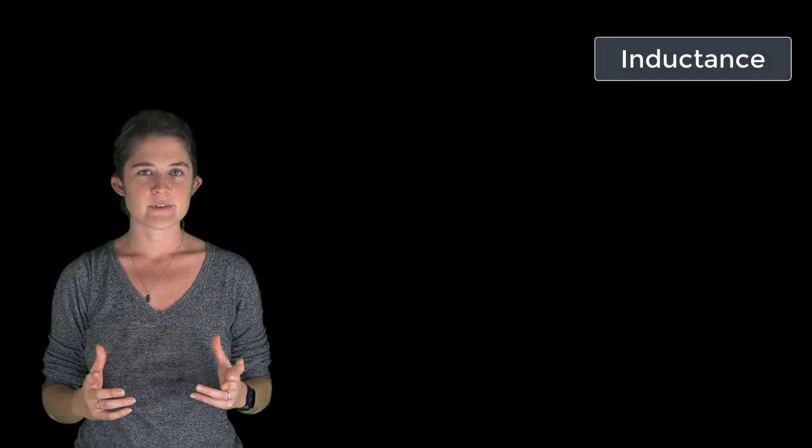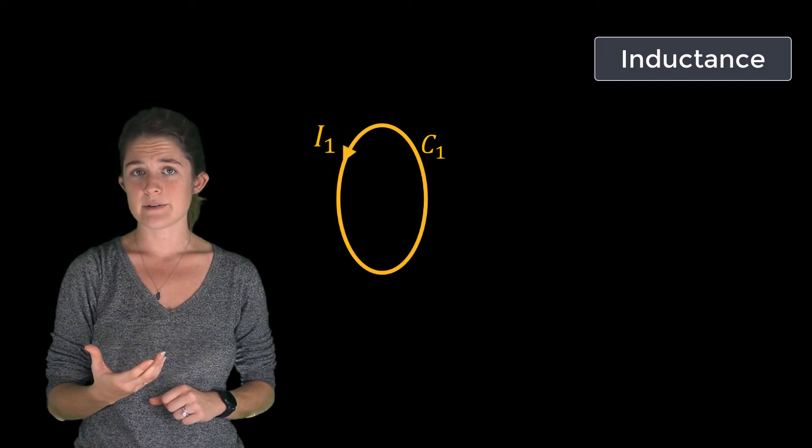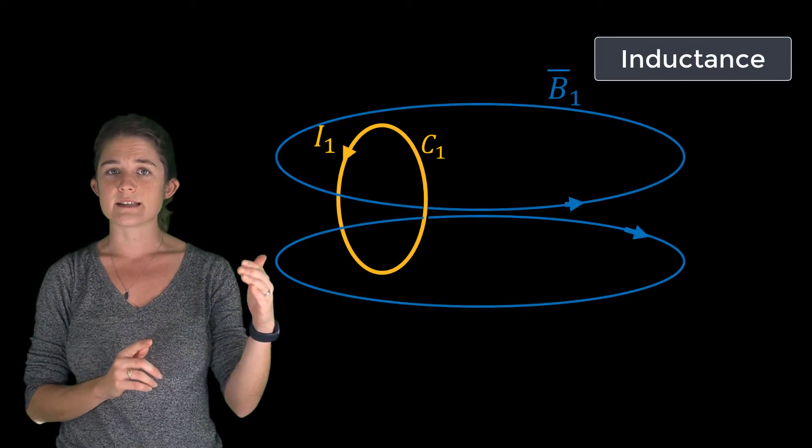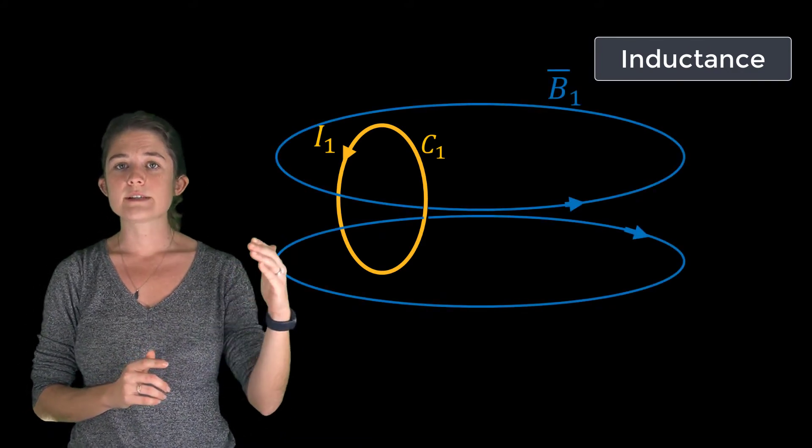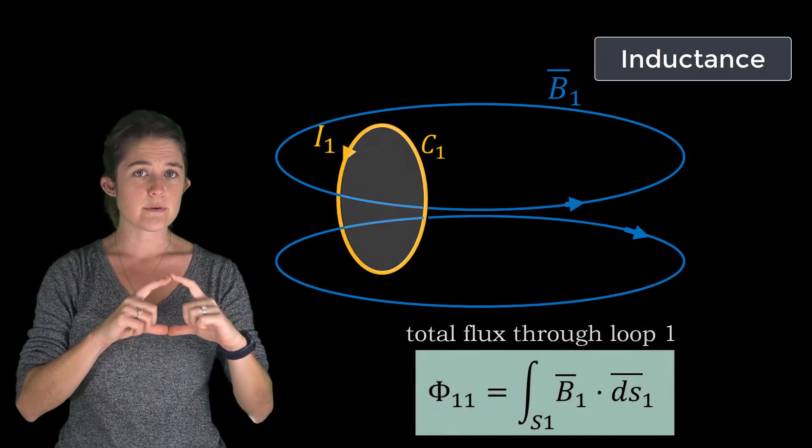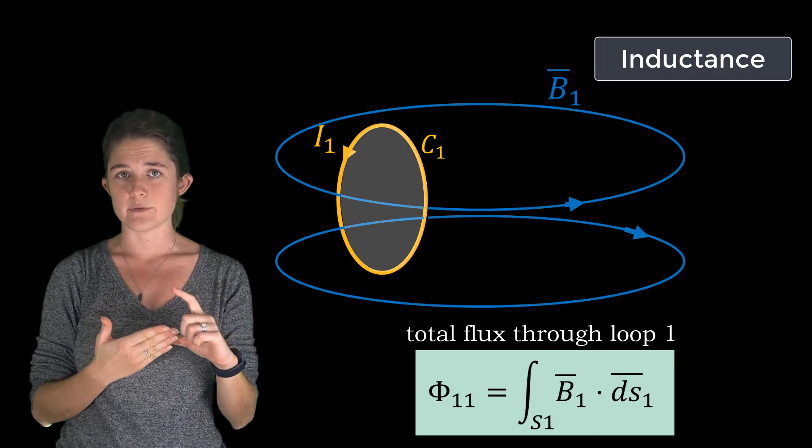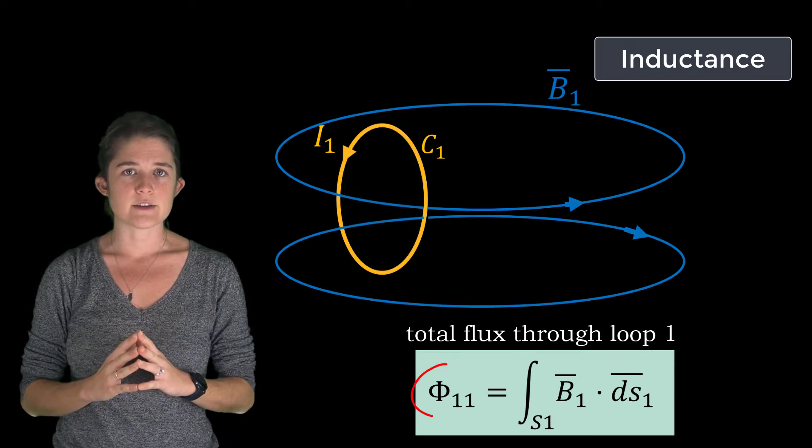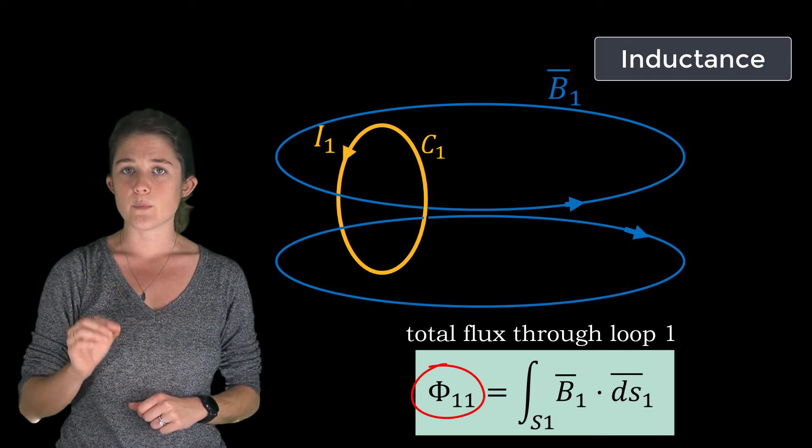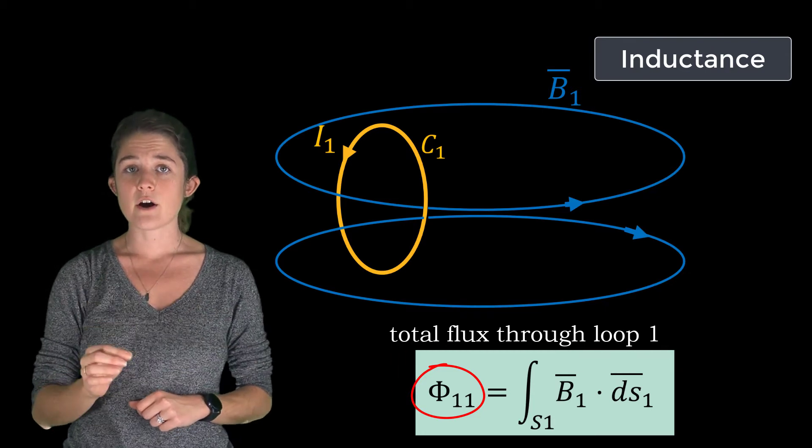Consider the following scenario: suppose you have a conductive loop C1 which carries a current I1. According to Ampere's law, this current will push a magnetic flux density B1 out the center of the loop and back around the outside. The total flux going through the loop is the integral of the flux density over the surface surrounded by the loop. We will denote total flux using the symbol Φ, and we will call this particular flux Φ11, meaning that it is the flux that passes through loop 1 and is caused by the current around loop 1.